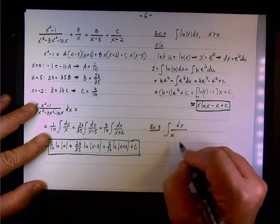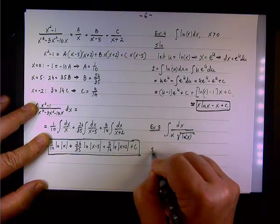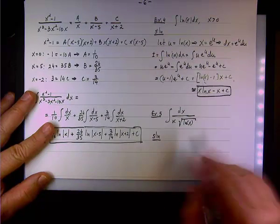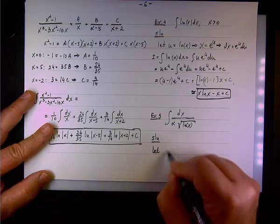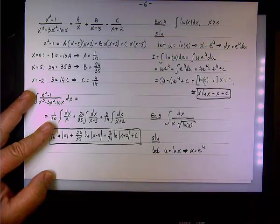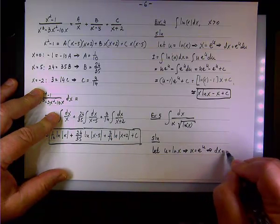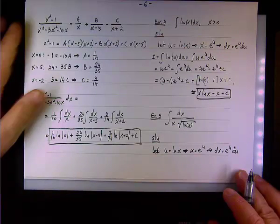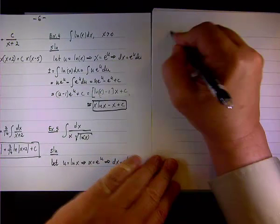Let's evaluate the integral of dx divided by x times the square root of the natural log of x. The strategy is again substitution: let u equal the natural log of x. As before, x equals e to the u and dx equals e to the u du — those are all handy substitutions.